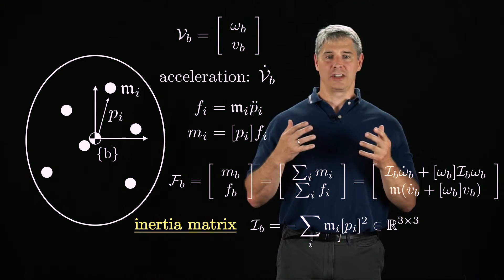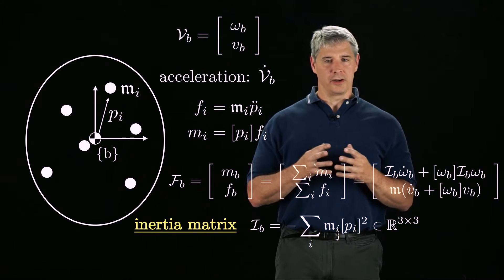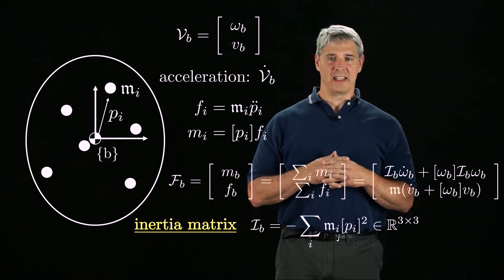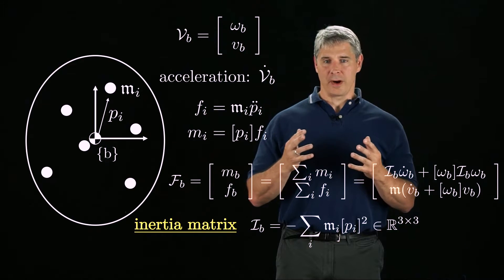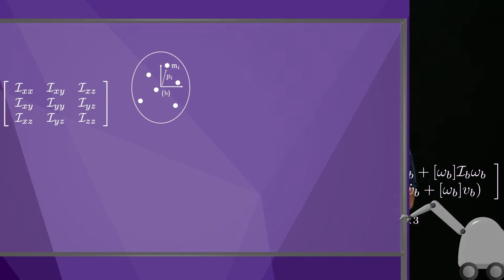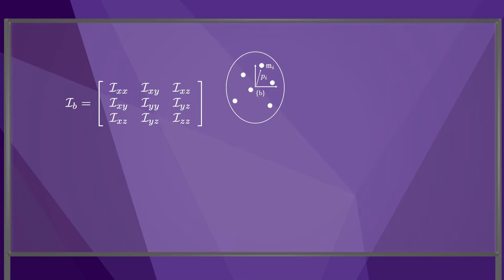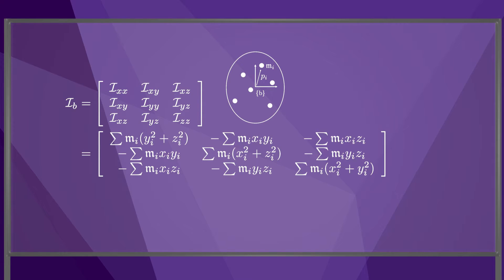The total moment mb is ib times omega-b-dot plus bracket omega-b times ib times omega-b, where ib is called the inertia matrix. The inertia matrix is the negative of the sum of each mass times the bracket of its position squared. We can write the 3×3 inertia matrix in terms of its 9 components, with diagonal terms i-xx, i-yy, and i-zz, as well as off-diagonal components i-xy, i-xz, and i-yz. These components are calculated as shown here.